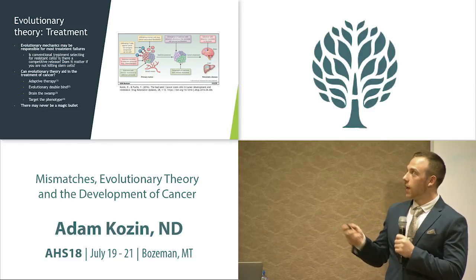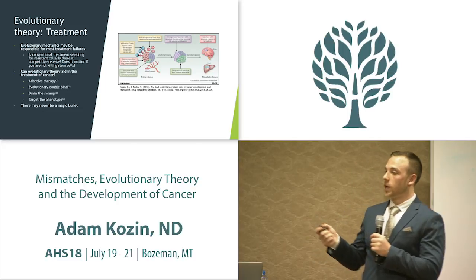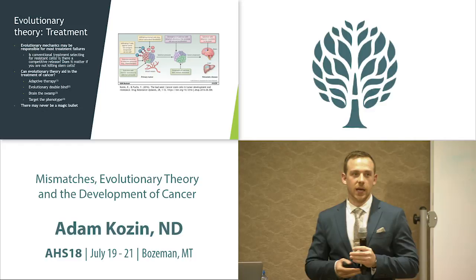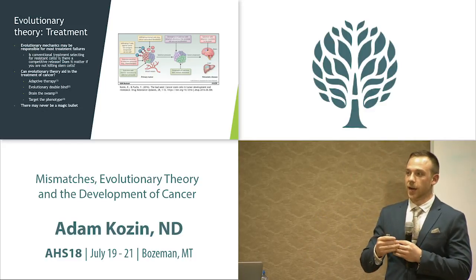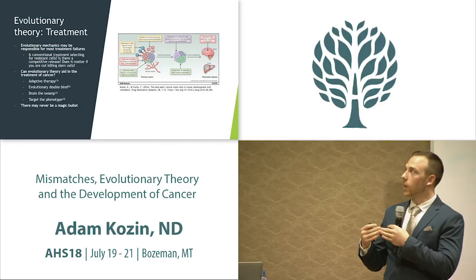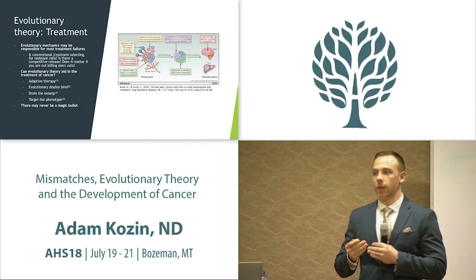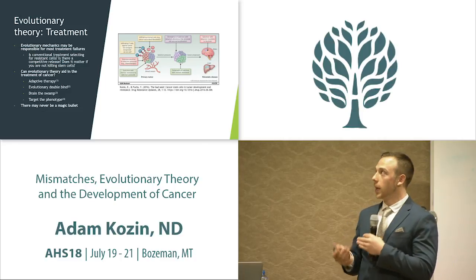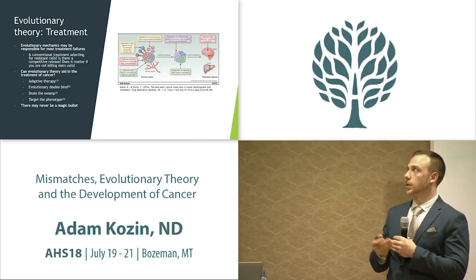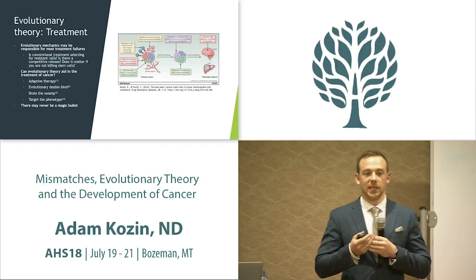In a heterogeneous tumor cell population, one therapy may take care of the main tumor bulk — the current goal of therapy is to debulk the tumor, decreasing the greatest number of cells. But due to the heterogeneity of the tumor, there may be resistant cells in that population. These resistant cells are usually more aggressive and can go on to form a new tumor that is more aggressive and more metastatic.